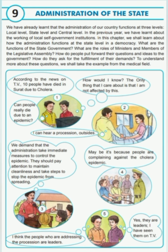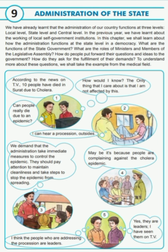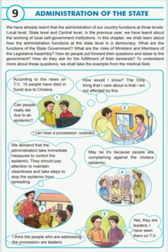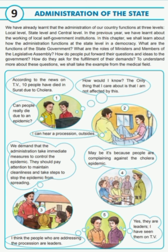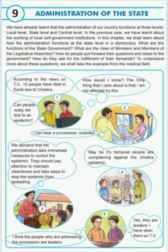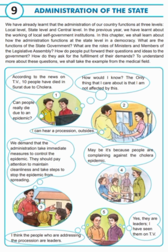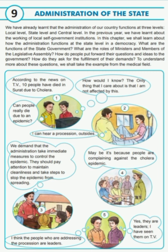What are the functions of the state government? What are the roles of ministers and members of the Legislative Assembly? How do people put forward their questions and ideas to the government? How do they ask for the fulfilment of their demands? To understand these questions, we shall take an example from the medical field. In this picture you can see that 10 people have died in Surat due to a cholera epidemic. This is an example.